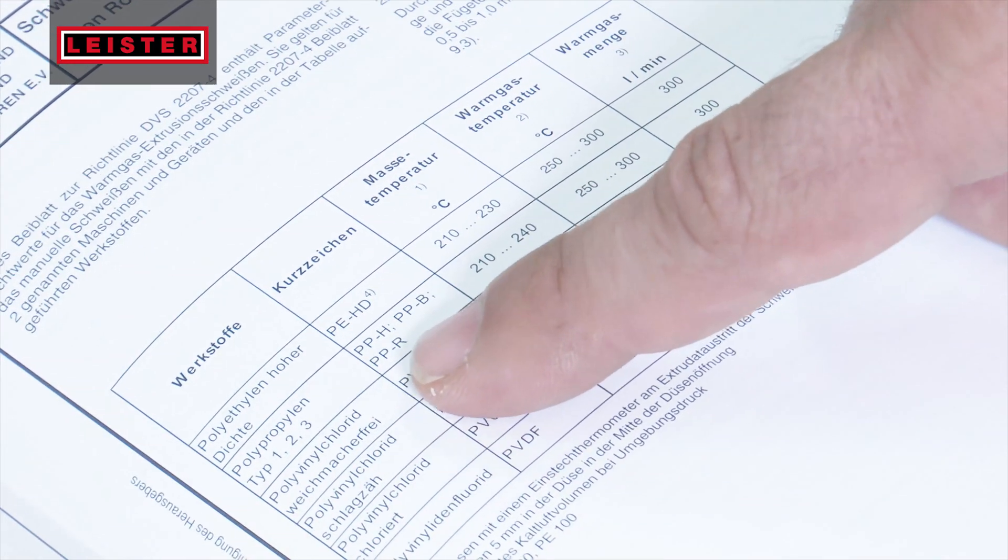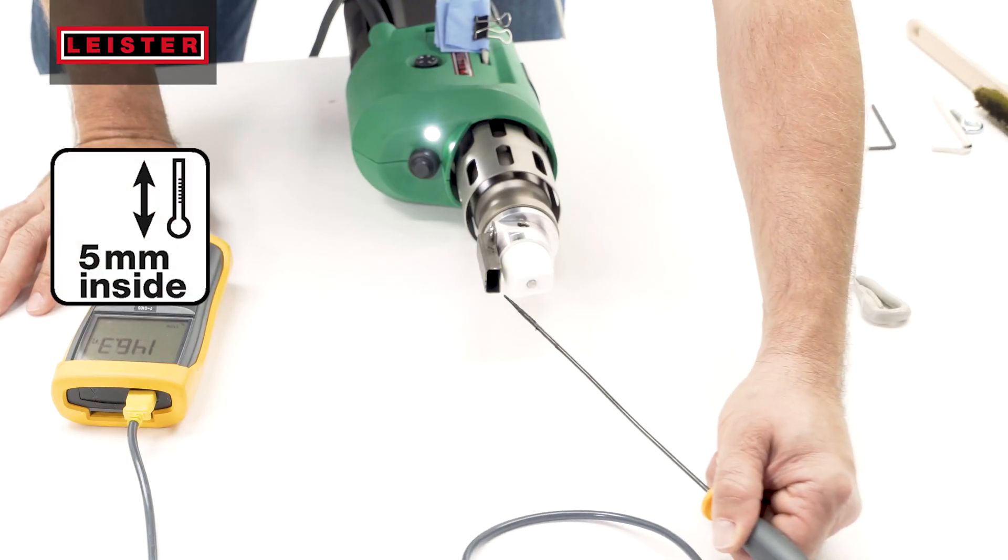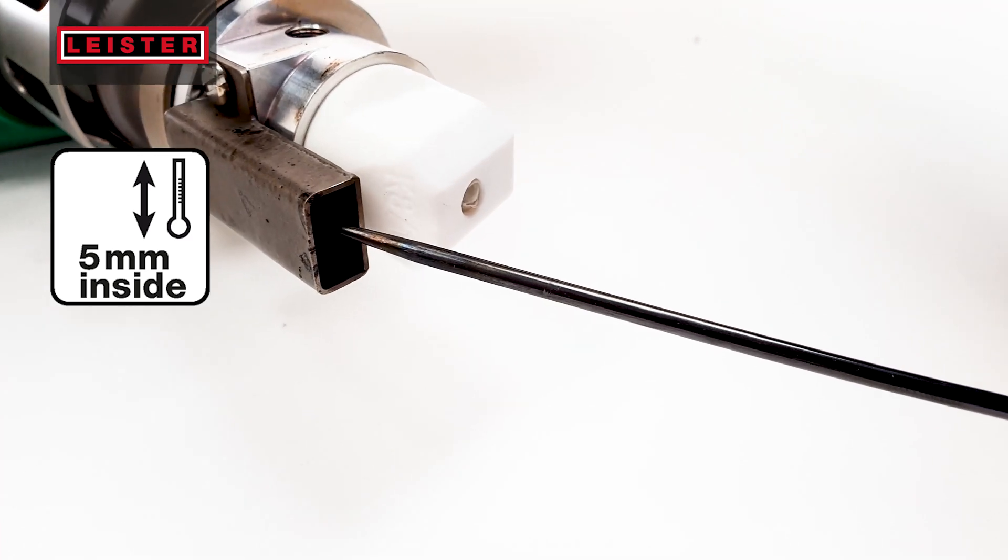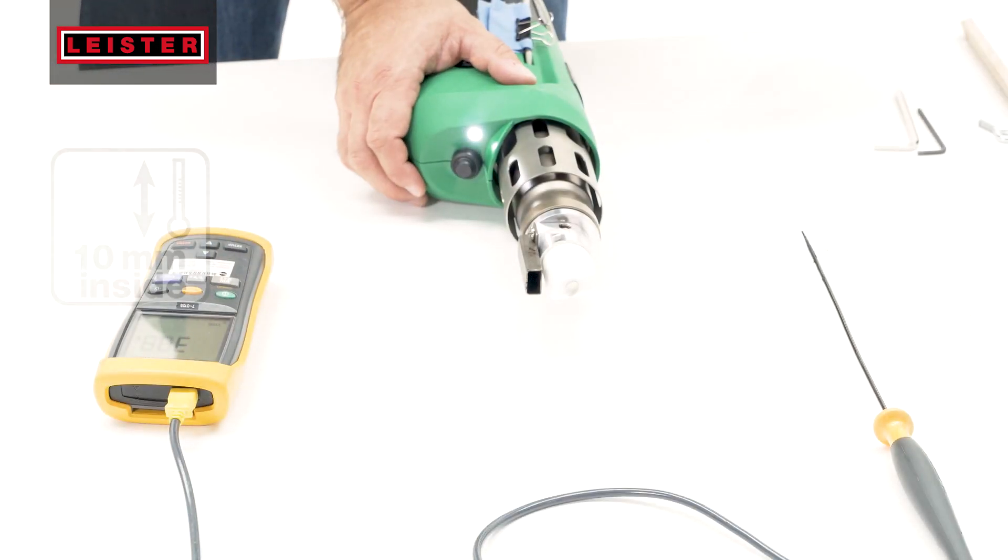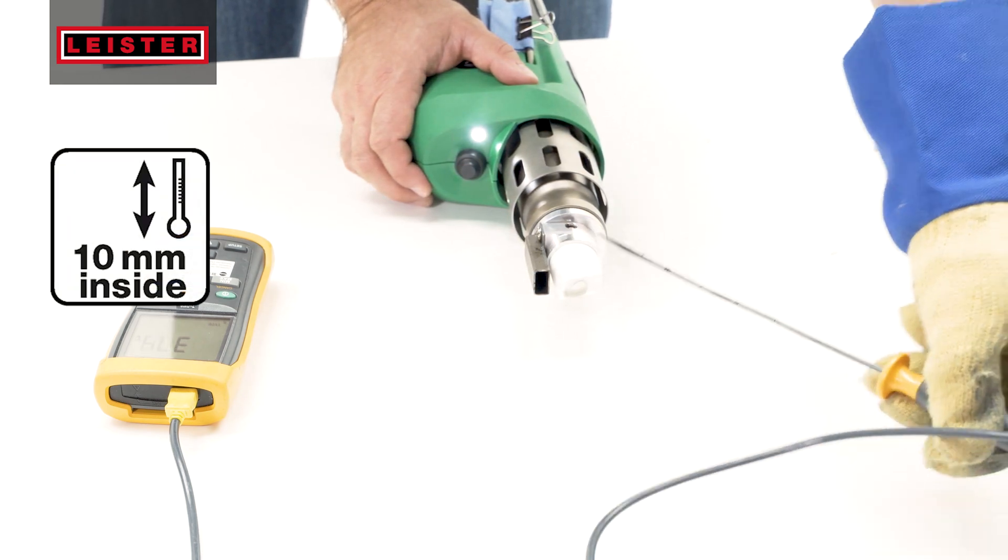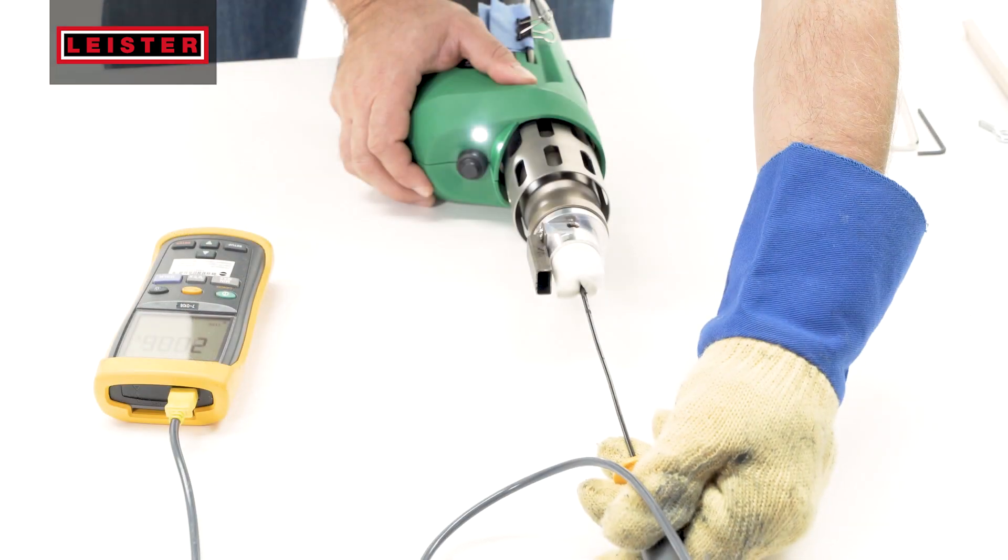The recommended processing temperatures are available from the material manufacturer. Turn the red temperature knob to adjust the air temperature. The Fusion One air temperature is automatically measured at a depth of 5mm inside the preheating nozzle. The plast temperature can be manually measured with the thermometer probe at a 10mm depth inside the welding shoe.